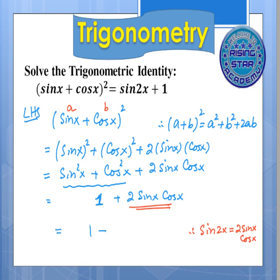So 1 plus sine of 2x, that is our required right hand side.